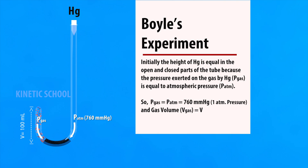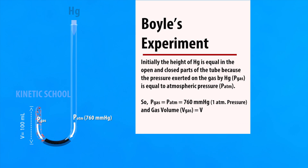Initially, the height of mercury is equal in the open and closed parts of the tube, because the pressure exerted on the gas by mercury is equal to atmospheric pressure. So the total pressure of the gas is equal to 1 atmospheric pressure, and its volume is V.